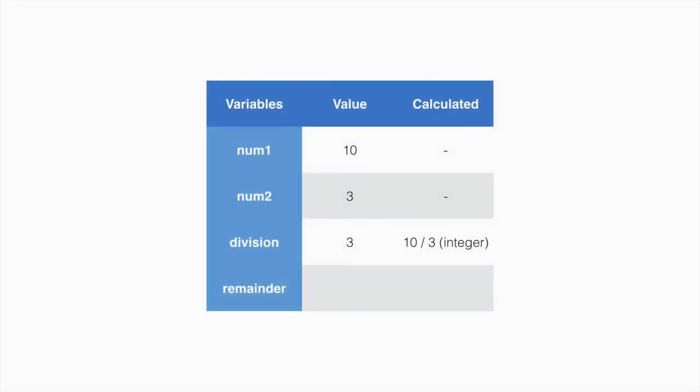So far, we have this. Num1 is 10, num2 is 3, and the value of the division is 3 as well. And it's calculated by dividing 10 over 3 and storing it inside an integer variable.